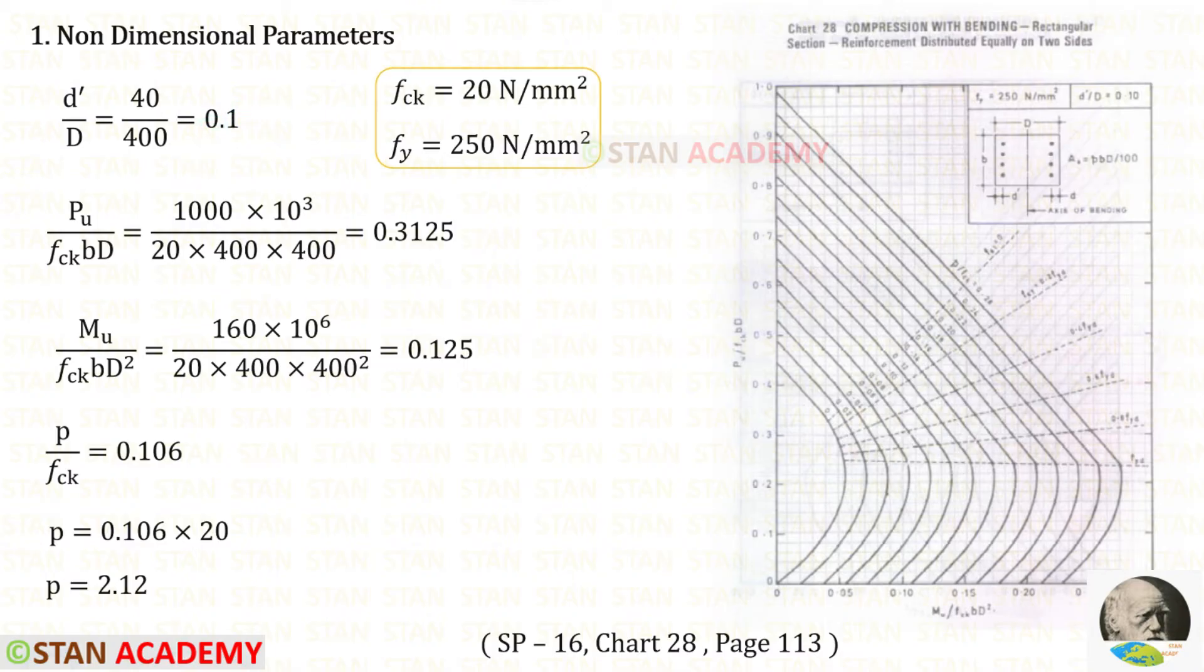Let us open the book SP-16 chart number 28 which is on page number 113. I have selected this chart because our Fy is 250, d dash upon d is 0.1, and I am going to distribute the reinforcement equally on two sides.